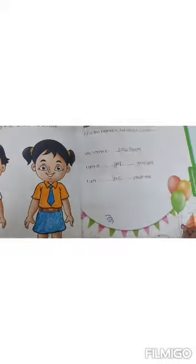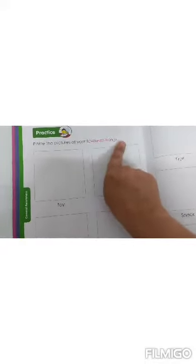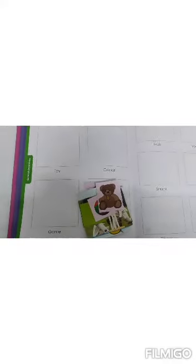Now come to next page, children. Next page is page number 62 and 63. What we have to do here: paste the pictures of your favorite things. Everyone has its own favorite things like favorite toy, favorite color, favorite game, cartoon, fruit, vegetable, snack, animal, flower, vehicle. What we are going to do over here? We will paste pictures. I have now taken some pictures of my own choice. You can see, these are the pictures. And now with the help of glue, I am going to stick these pictures over here. You have to paste any one-one favorite things of your own choice over here. Let's begin.